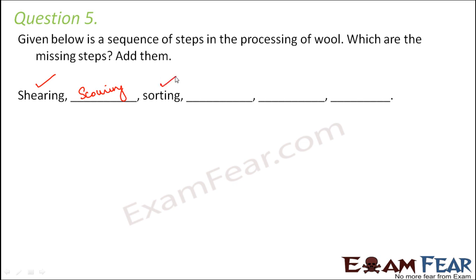Once cleaned, the wool needs to be separated so that different types and textures of wool are separated from each other. Next is burr picking. In burr picking, the burrs present in the wool which make its texture rough are found, and then it is scoured and heated again so that the burrs can be removed and the wool can have a smooth texture.